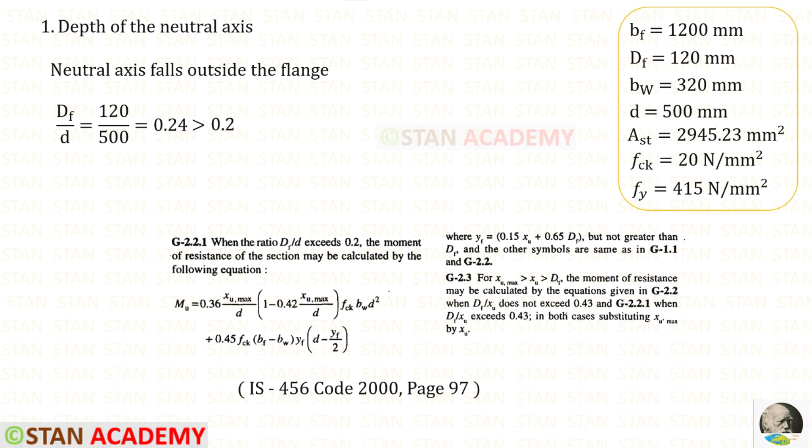Now we have to check whether the ratio DF upon D exceeds 0.2. DF upon D exceeds 0.2 because we have got 0.24. In this case the moment of resistance should be calculated by this equation, but we have to also follow the clause G 2.3. We can see that later.